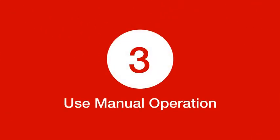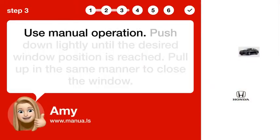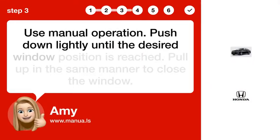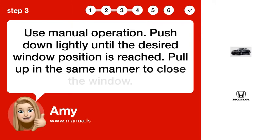Step 3: Use manual operation. Push down lightly until the desired window position is reached. Pull up in the same manner to close the window.